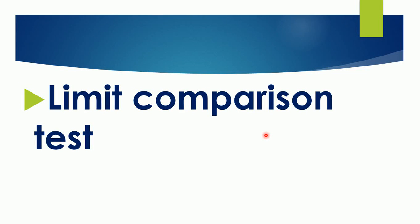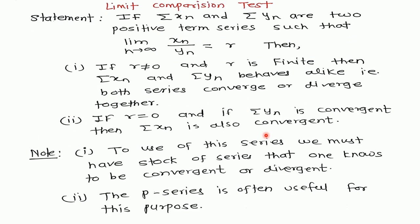In this video I am going to explain how to deal with the limit comparison test. The statement of the test: if xn and yn are two positive term series such that limit as n tends to infinity of xn/yn equals r, then first, if r is not equal to zero and r is a finite value, then both series xn and yn behave alike — that is, both series converge or diverge together.